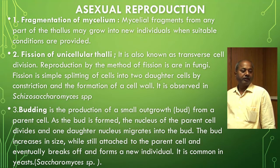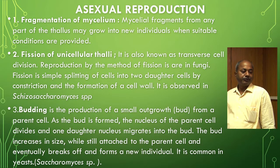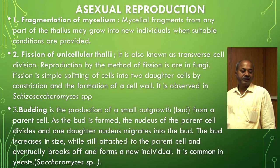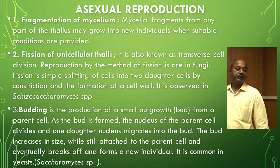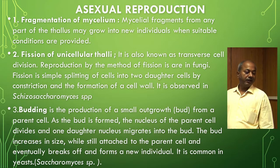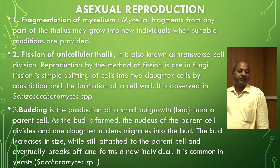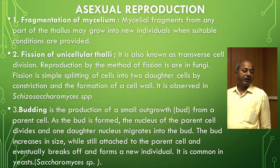Asexual reproduction may be carried out by fragmentation of the mycelium or fission of unicellular thalli. In fragmentation, mycelial fragments from any part of the thallus may grow into new individuals when suitable conditions are provided. Fission, also known as transverse cell division, is the simple splitting of cells into two daughter cells by constriction and formation of a cell wall. It is rare in fungi and is observed in Schizosaccharomyces species.